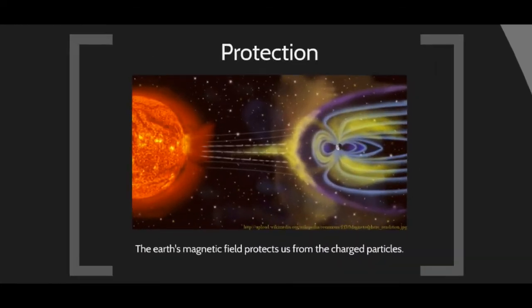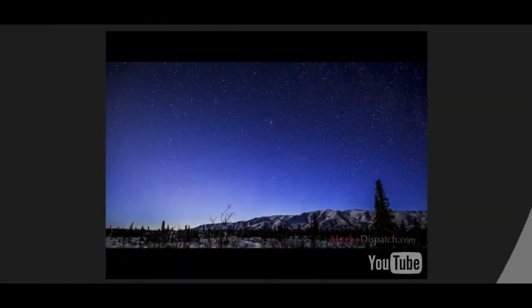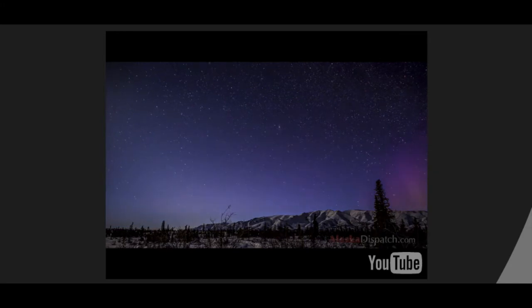The Earth is protected from solar weather events by its magnetic field, which deflects particles coming from the Sun. The upper atmosphere also deflects and absorbs much of the light. Charged particles that are deflected draw into the Earth's magnetic field, particularly near the poles where field lines converge, pulling them down into our atmosphere. These charged particles interact with atmospheric molecules, exciting them and causing them to emit light — creating the northern lights, also called the aurora borealis.